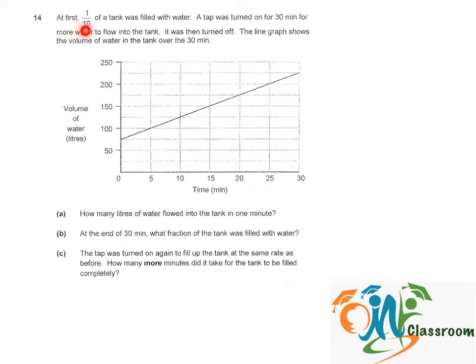At first, 1 over 10 of a tank was filled with water. A tap was turned on for 30 minutes for more water to flow into the tank. It was then turned off. The line graph shows the volume of water in the tank over the 30 minutes. How many liters of water flowed into the tank in one minute?